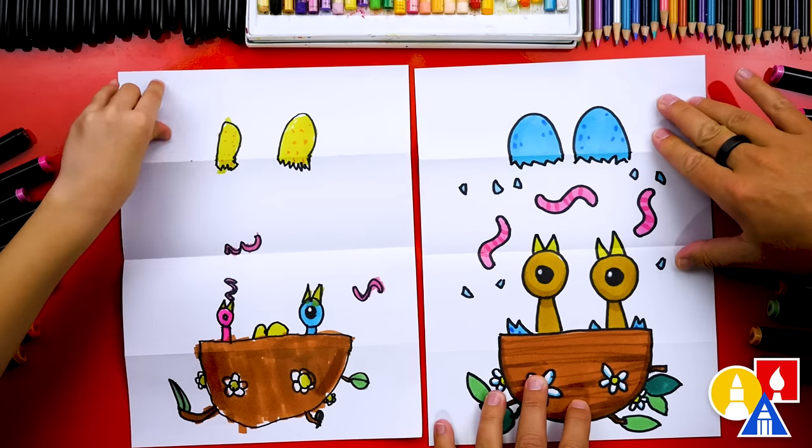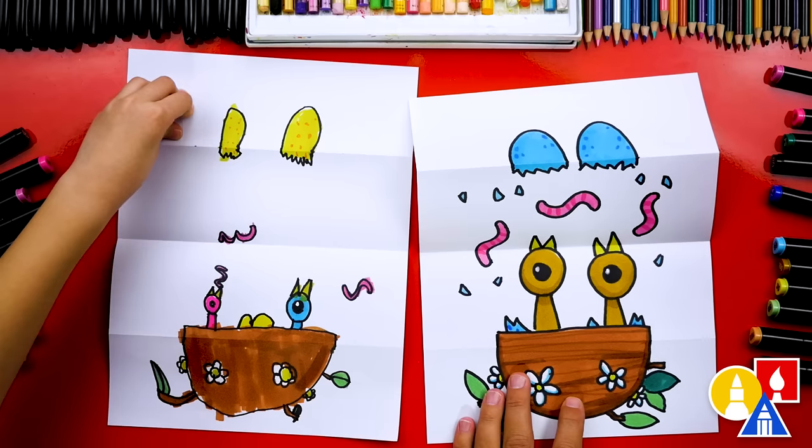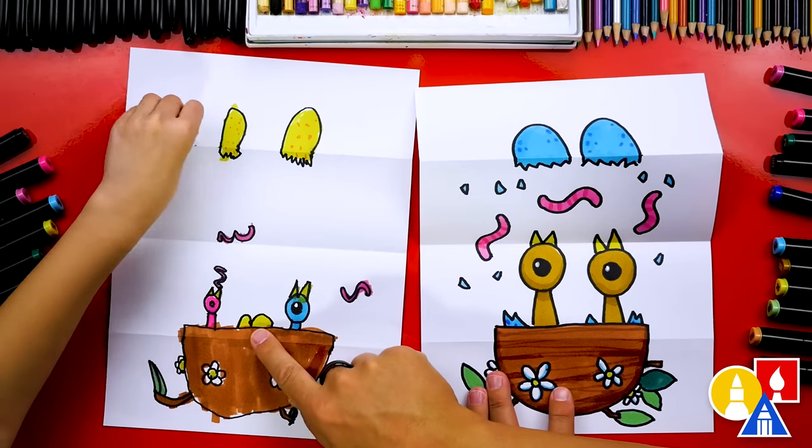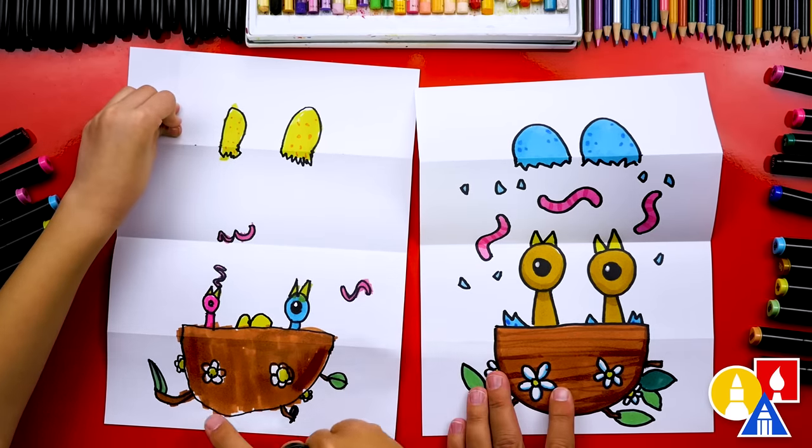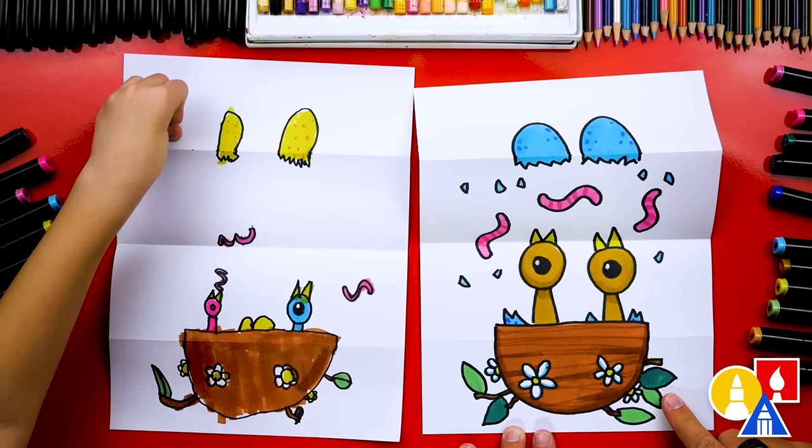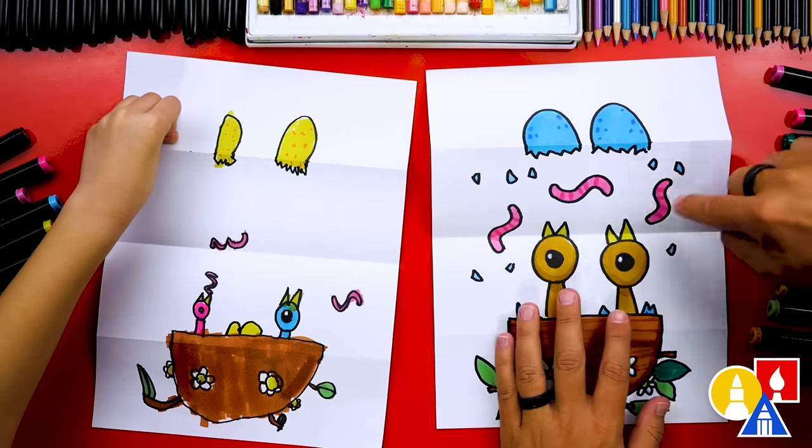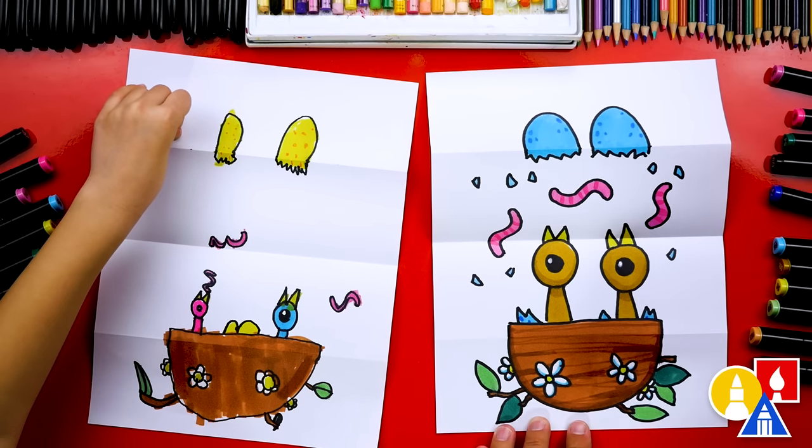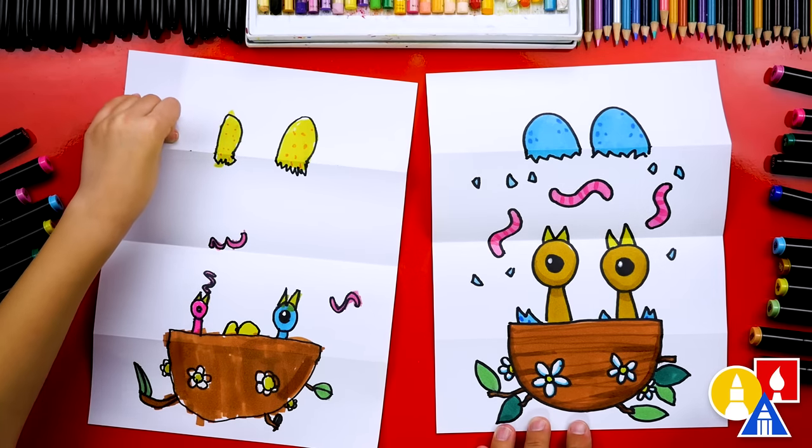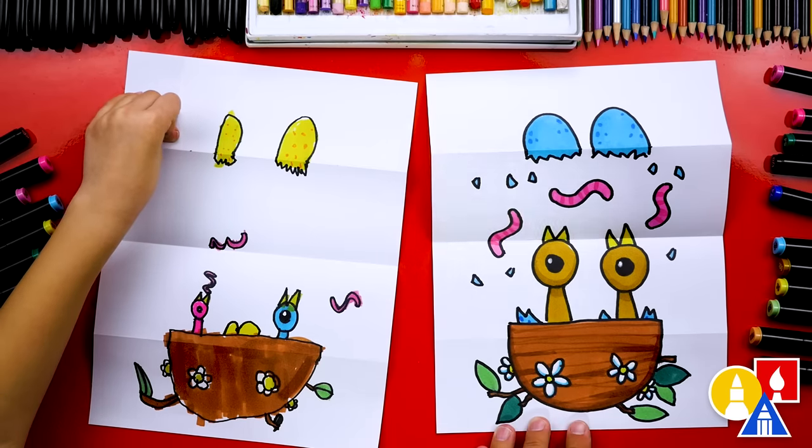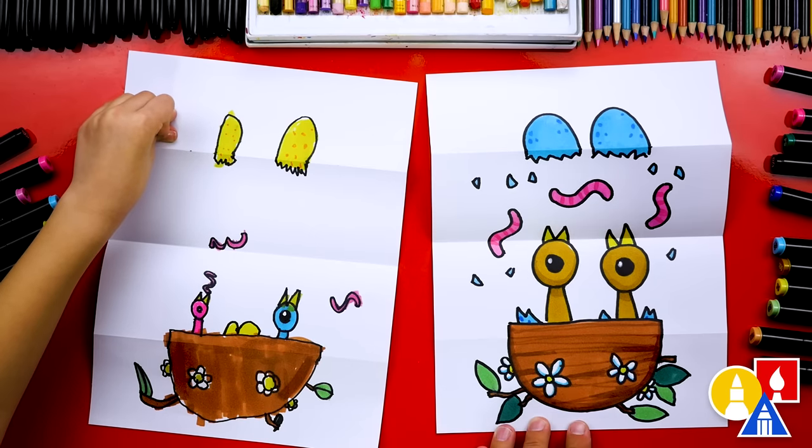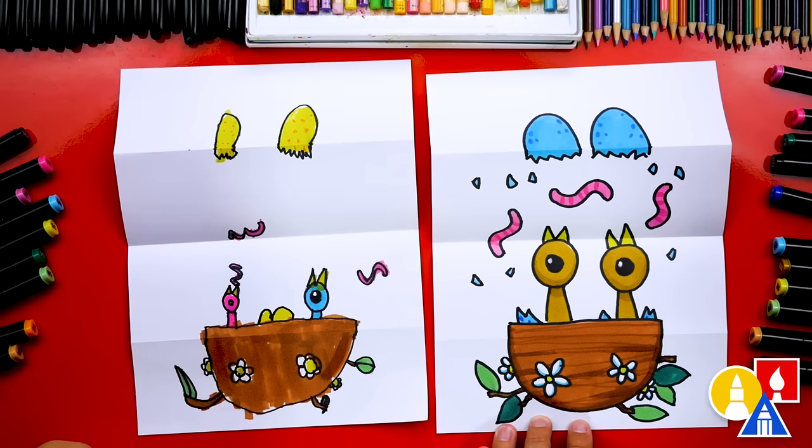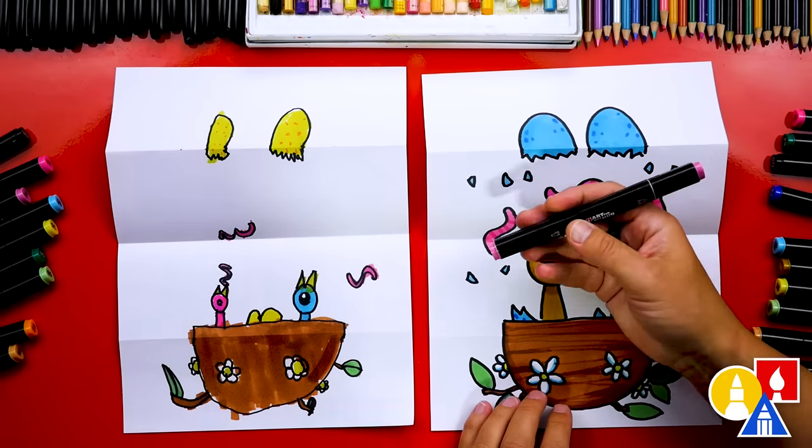You guys can pause the video right now to match our same coloring or you can color your drawings any way you want. You could also add extra things. We also added leaves to our nest and I added shells that are breaking apart from the eggs. You could draw mama bird coming in or even daddy bird flying in to do the feeding.